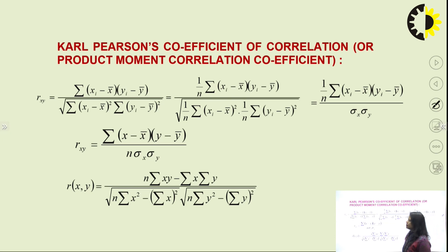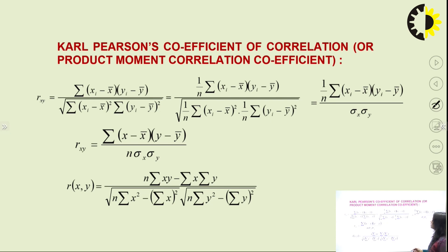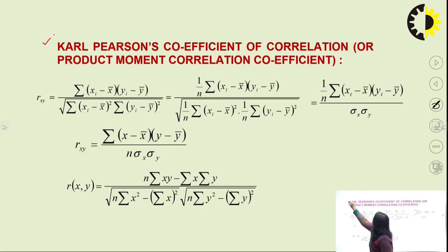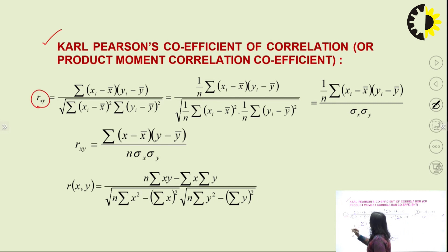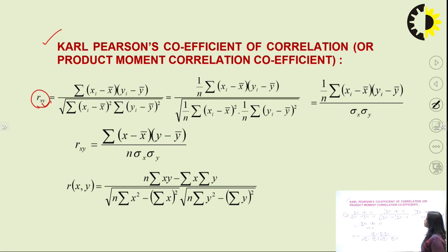Now, for measuring correlation — because correlation is required to be measured — we will use Karl Pearson's coefficient of correlation, also known as the product moment correlation coefficient. This is denoted by the symbol r_xy, where x and y are the variables which are related to each other. So r is the correlation coefficient and x, y are the related variables.